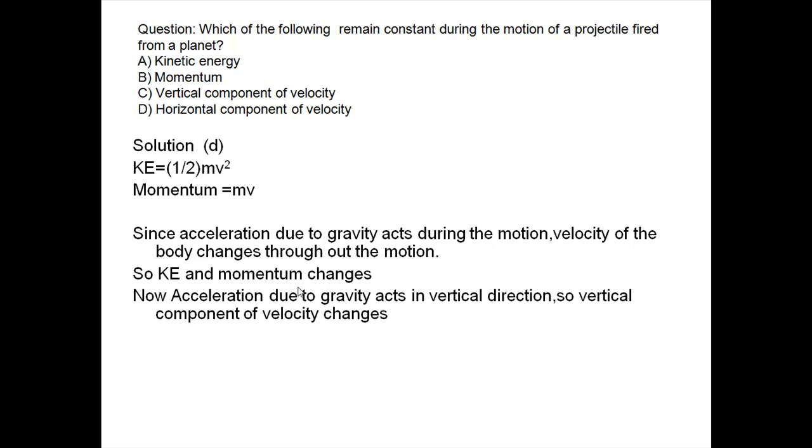Acceleration due to gravity acts in the vertical direction. The vertical component of velocity changes. Since acceleration is acting in the vertical direction only, the vertical component of velocity is getting changed. The horizontal component of velocity is remaining constant. There is no horizontal acceleration, so horizontal component remains constant.